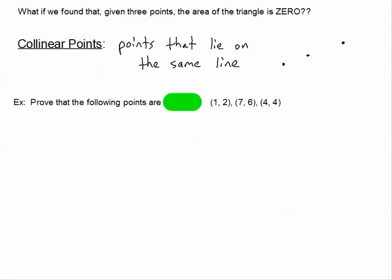So we can ask this in two different ways. The example that I chose is to prove that the following points are collinear. Prove that these three points are collinear. What's implied in this statement is that they are going to be collinear.